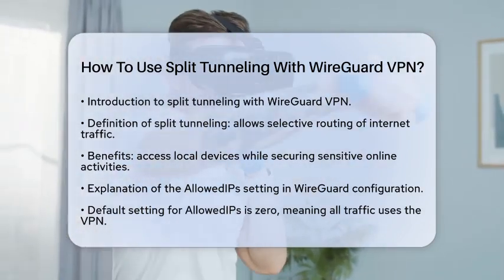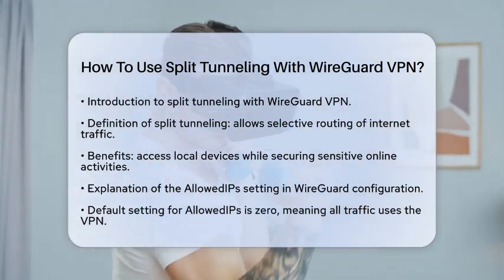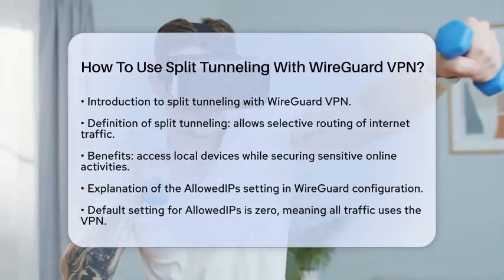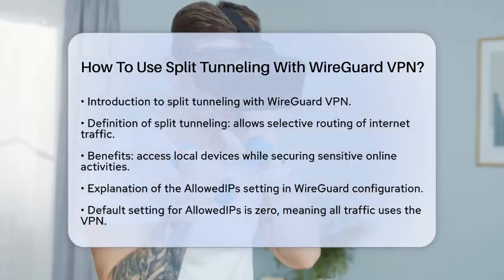By default, AllowedIPs is set to 0.0.0.0/0, which means all traffic goes through the VPN.